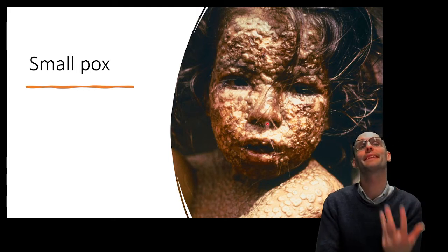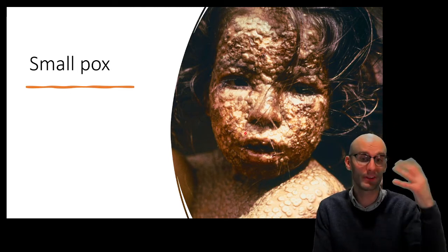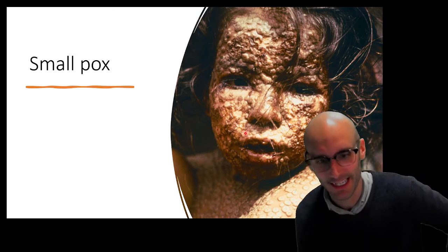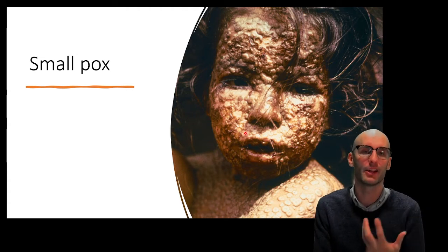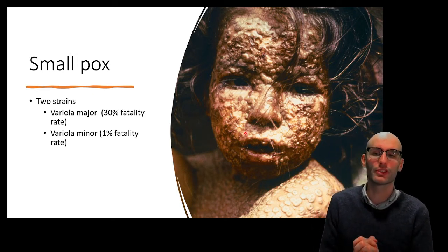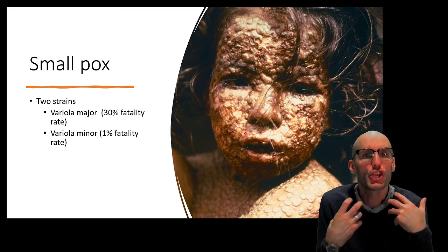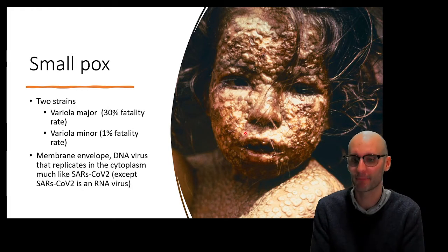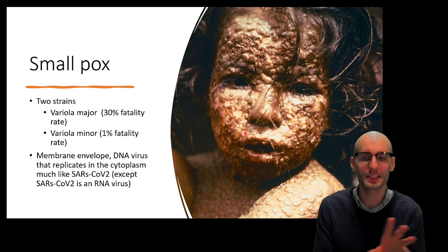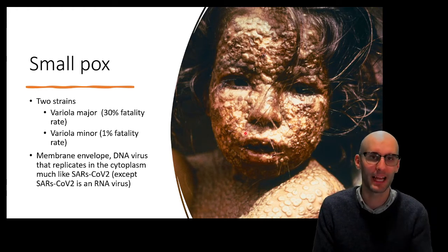Let me start by telling you about the first disease we ever vaccinated against very effectively — smallpox. It's a horrific disease. In fact, I would guess the Game of Thrones dragon scale is based on it, because it very visibly affects the skin. There are two strains: variola major causes 30% fatality and variola minor causes about 1% fatality. 30% fatality is a huge rate for a virus — that is terrifying. It's a DNA virus with a membrane envelope that replicates in the cytoplasm, very similar to SARS-CoV-2, except SARS-CoV-2 is an RNA virus.